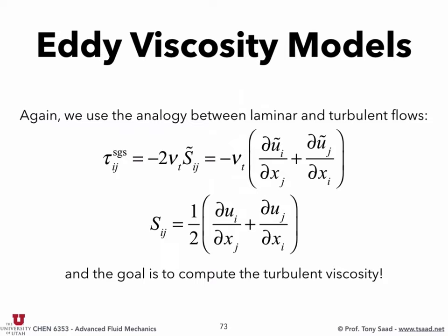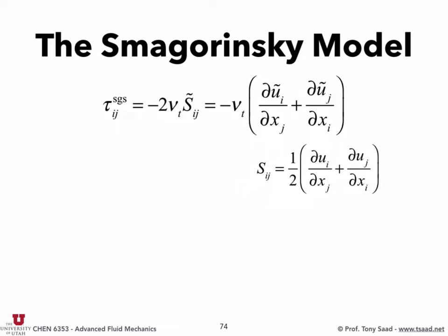We're moving the complexity around: we started with uu-tilde minus u-tilde u-tilde, called that a stress tensor, said it's proportional to the Newtonian stress tensor, but we need to find the proportionality coefficient — it's not a constant, it varies in space and time. The problem is now identical to the Reynolds averaging problem: we need to find an eddy viscosity.